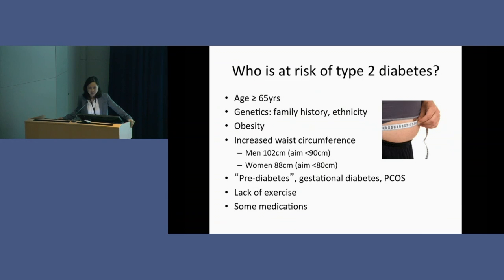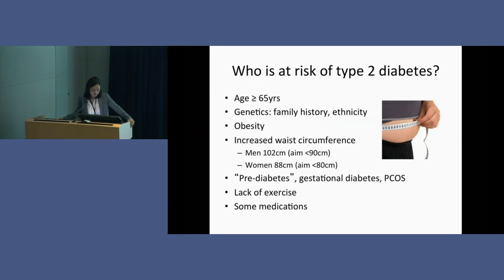Who is at risk? These are things everyone should know, because these are the people who should be tested for diabetes. Anyone over the age of 65, anyone with a family history, certain ethnicities — Asian, Indian, Middle Eastern backgrounds have very high rates. Obesity and increased waist circumference: if your waist is more than 100 cm for men or more than 85 cm for women, you should go for a check. Also, if you have pre-diabetes, gestational diabetes, polycystic ovarian syndrome, don't exercise very much, or are on certain types of medications, you should really be screened for diabetes or pre-diabetes.